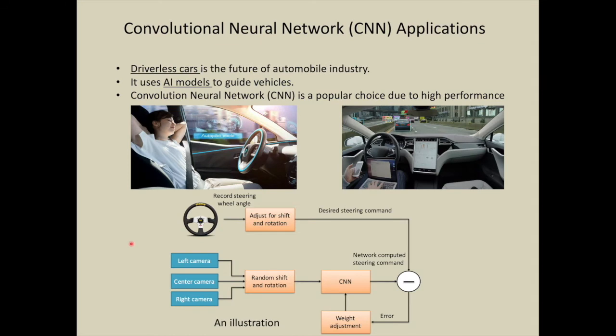How does the driverless car work? It uses sensors which are connected at different locations - left, right, center - and the data accumulated by sensors are processed via CNN, which makes decisions regarding the operation of the car, for example providing steering commands.